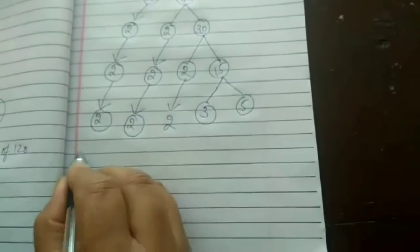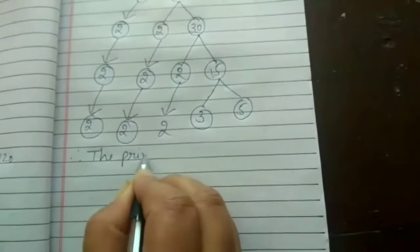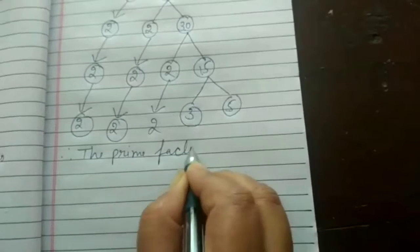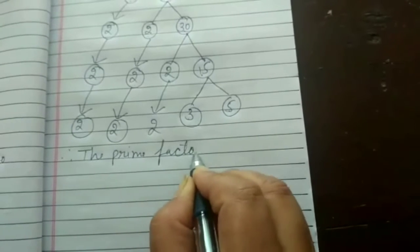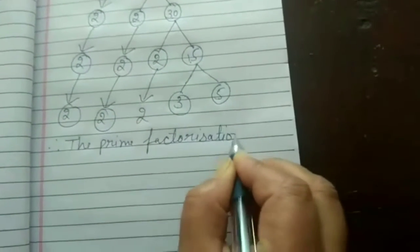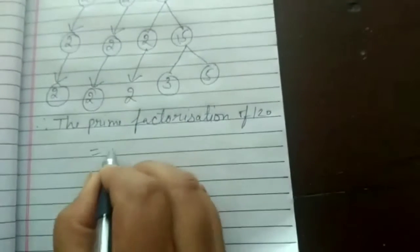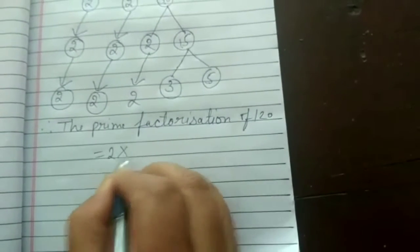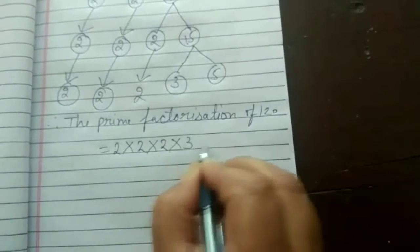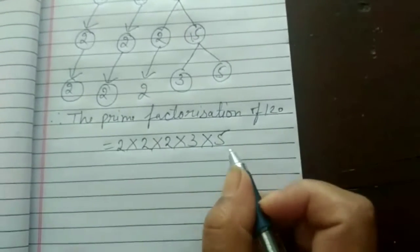And you have to write 15 in 2 parts: 3 multiplied by 5. So therefore the prime factorization of 120 is equal to 2 multiplied by 2 multiplied by 2 multiplied by 3 multiplied by 5.